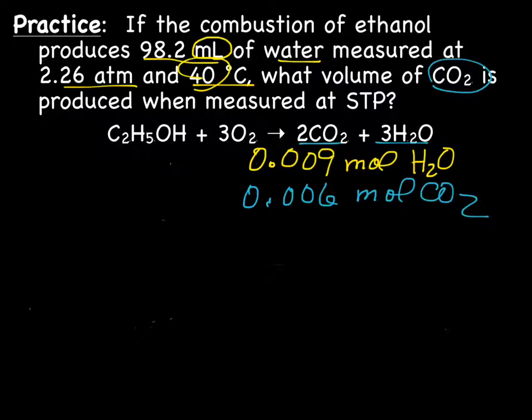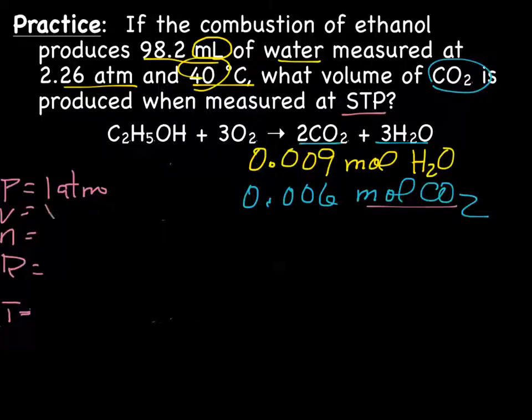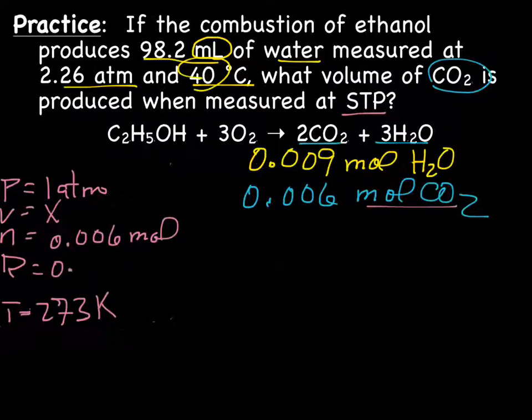Now we know we have 0.006 mole CO2. We want to get to the volume of CO2. Now we know the mole of CO2. They give us standard temperature and pressure, which means we know temperature and pressure, and we can solve for volume. We're going to have P, V, N, R, and T. Our pressure is going to be 1 atm for standard pressure. Our volume is our X. We have 0.006 moles. The temperature is 273 for standard temperature. And because we have atm, we're going to use 0.0821 liters atm mole K.